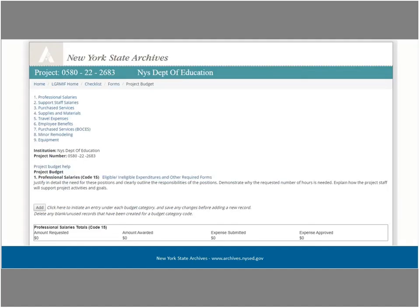Mark will now guide you through the project budget. To access the project budget, click on the Forms link in the toolbar or the Checklist link. The project budget is worth 20% of your application score. Here, you will provide detailed information on your proposed expenditures. Reviewers evaluate your proposed budget based on how well you justify all expenditures as being necessary and reasonable. The project budget consists of nine budget codes. Click on the appropriate link at the top of the project budget page to access any of them. Each budget code has two parts: a budget table and a budget narrative.